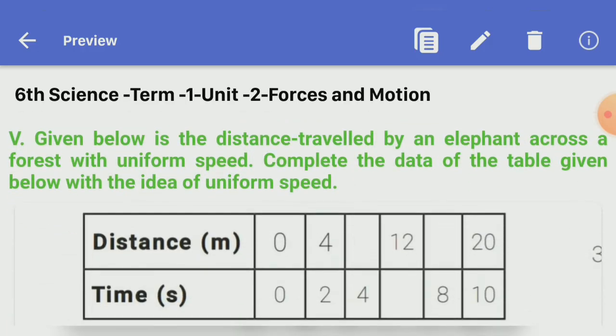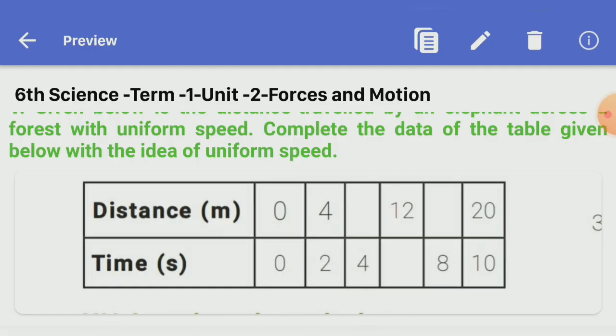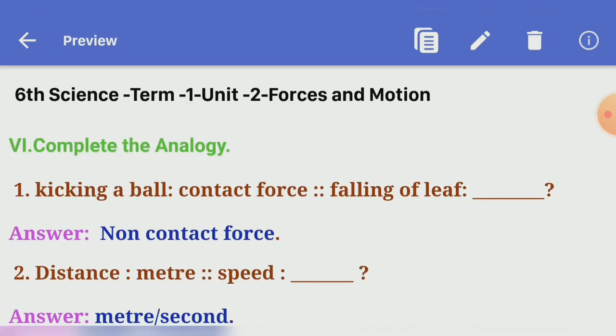Fifth roman: given below is the distance traveled by an elephant across a forest with uniform speed. Complete the data of the table given below with the idea of uniform speed. I have written the data in the table with correct times. The answers are 8 and 10.